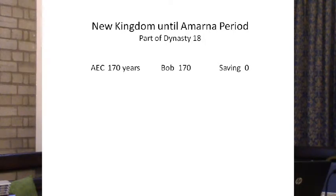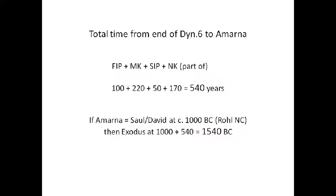For the New Kingdom, the first part, I'm not proposing to make any saving, although an article did come out recently saving at least five years. Summing up the total savings: the lengths I'm proposing for the First Intermediate, Middle Kingdom, Second Intermediate, and part of New Kingdom total 540 years. If Amarna is the same time as Saul and David at about 1000 BC following Rohl's new chronology, then we get an Exodus at 1540 BC, not the apparent biblical 1450 BC, but 90 years earlier.